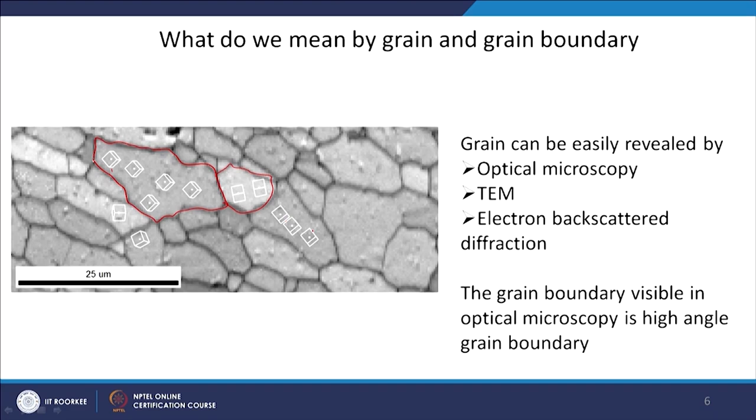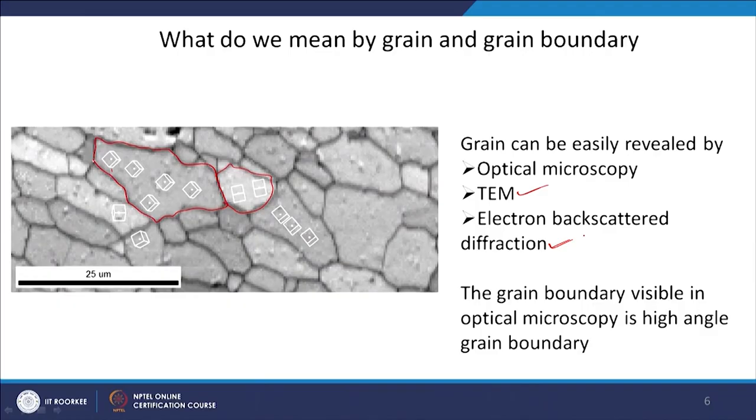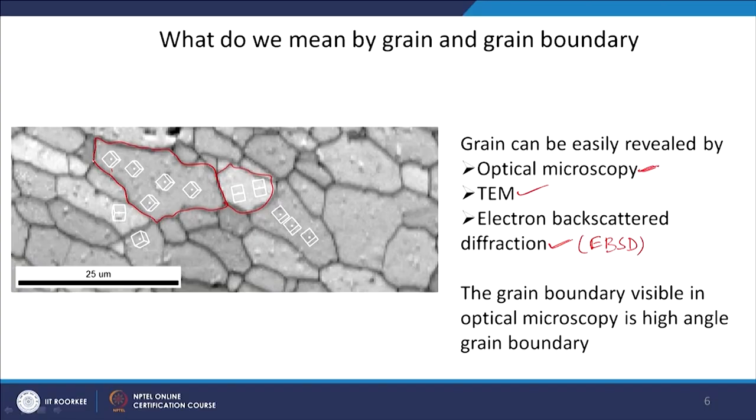Low angle grain boundaries, or sub-grain boundaries as shown schematically in the previous slide, will not be visible in an optical microscope. For that you can use TEM (transmission electron microscopy) or the newer technique called electron backscatter diffraction (EBSD) to characterize sub-grain boundaries or low angle grain boundaries. Optical microscopy will show you mostly the high angle grain boundaries — grain information only, not sub-grain.